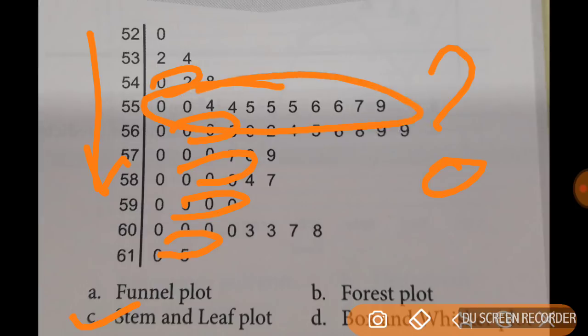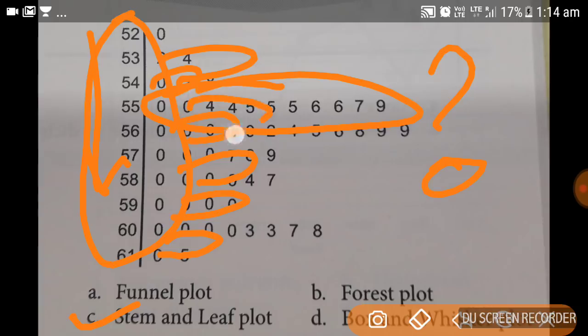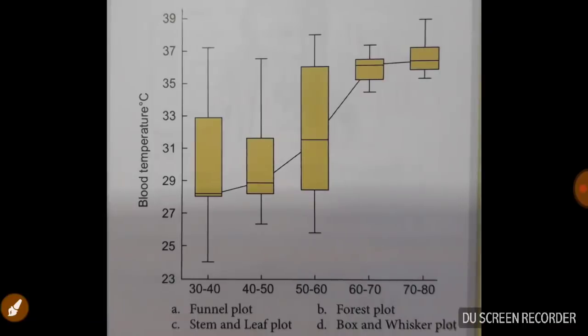It is basically a detailed quantitative data presentation. A method for showing frequency with which certain classes of values occur. So this is the stem. This forms the stem. And the horizontal are the leaves of this stem and leaf plot. Moving to the next one. Can you name it? Just name it for me.